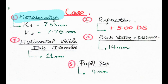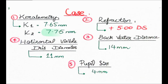The keratometry readings are the important parameters for calculating lens parameters. While doing keratometry, K1 gives a reading of 7.65 millimeters and K2 gives 7.75 millimeters.